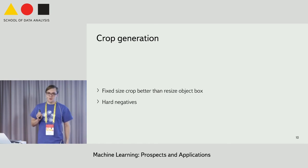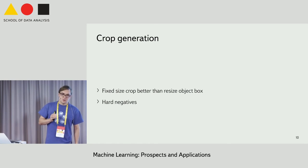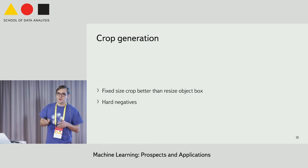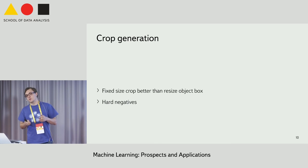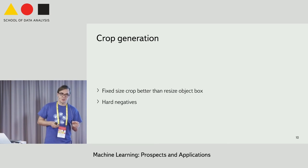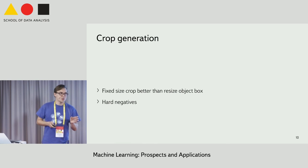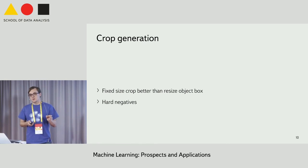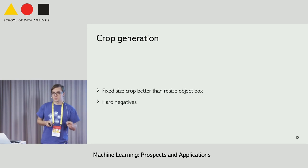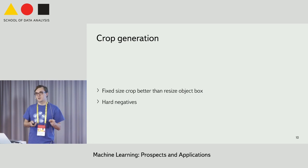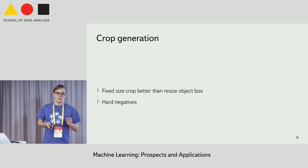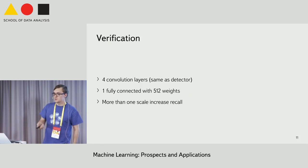There are two important questions about how to learn the binary classifier. First of all, fixed-size crops are much better than resizing of object boxes. And it is crucially important to use hard negatives — it dramatically improves performance.